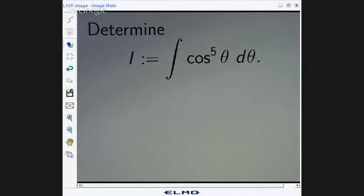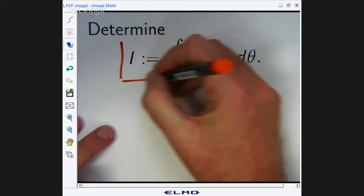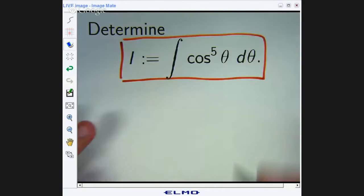Alright, here is the example we're going to look at. We've defined i to be this integral. We have got a power of cosine and we want to integrate it with respect to theta. Alright, so it's a power.